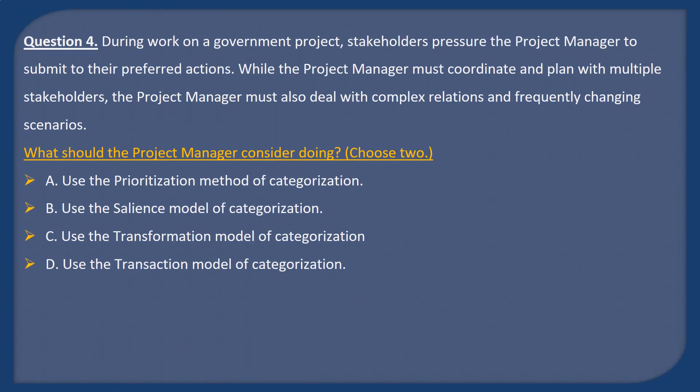Question 4. During work on a government project, stakeholders pressure the project manager to submit to their preferred actions. While the project manager must coordinate and plan with multiple stakeholders, the project manager must also deal with complex relations and frequently changing scenarios. What should the project manager consider doing? Choose two. A: Use the prioritization method of categorization. B: Use the salience model of categorization.